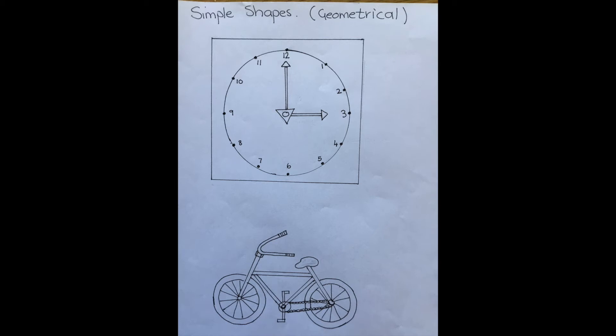Let's have a quick look at this picture of simple shapes. We have a square, and inside our square we have a circle. Inside our circle we have a triangle for the middle of our clock. We have rectangles for the arms of the clock, and two triangles for the pointers — and then we have our clock.